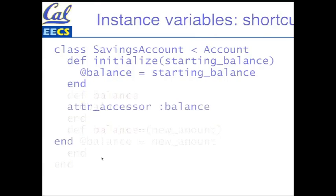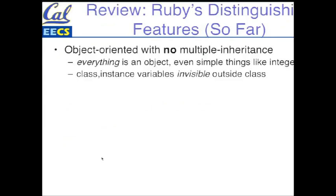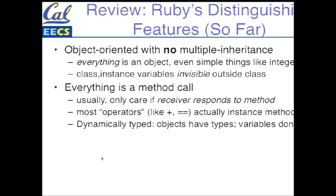So, with that in mind, here's where we are so far. Ruby is object oriented, and there's no multiple inheritance. There's a far cooler thing than multiple inheritance, which we're going to meet shortly, called a mixin. Everything is an object, and the only way you get things done is by calling methods on those objects. So class and instance variables are invisible outside the class. You got to call a method to do anything to them.